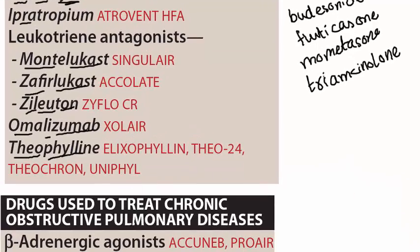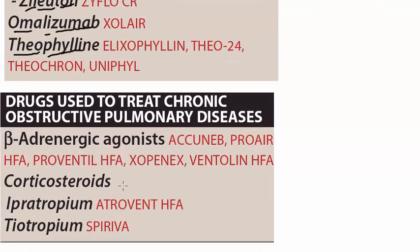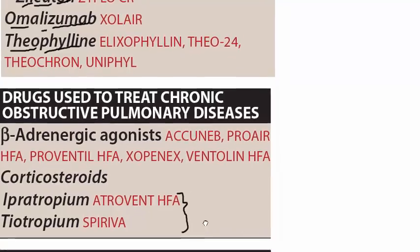For chronic obstructive pulmonary disease, we again use beta adrenergic agonists such as albuterol, terbutaline, and salbutamol. We may also use corticosteroids — the same ones mentioned above — and cholinergic antagonists like ipratropium and tiotropium.